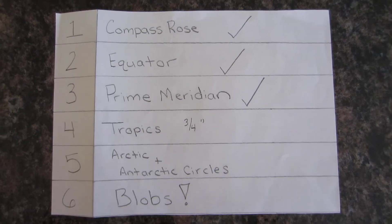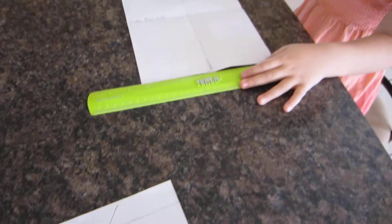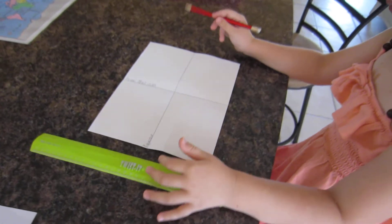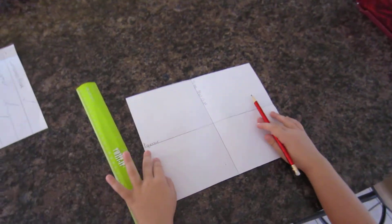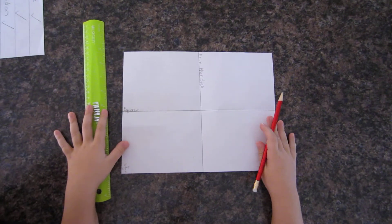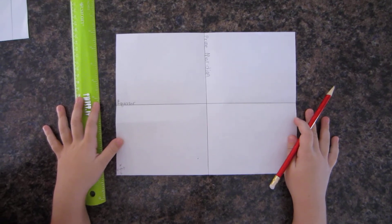Okay, so we finished our equator and prime meridian line and now we're going to get the tropic lines. Some people do them one inch from the equator, we liked ours better when it was three-quarters of an inch.